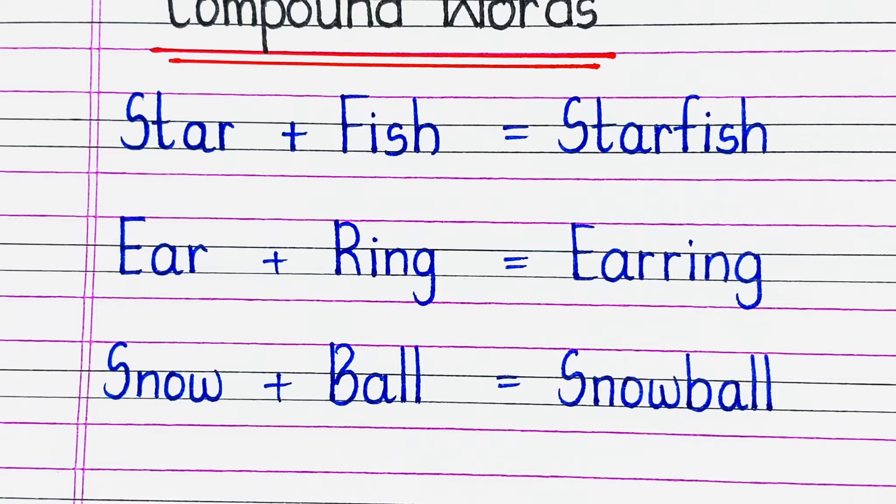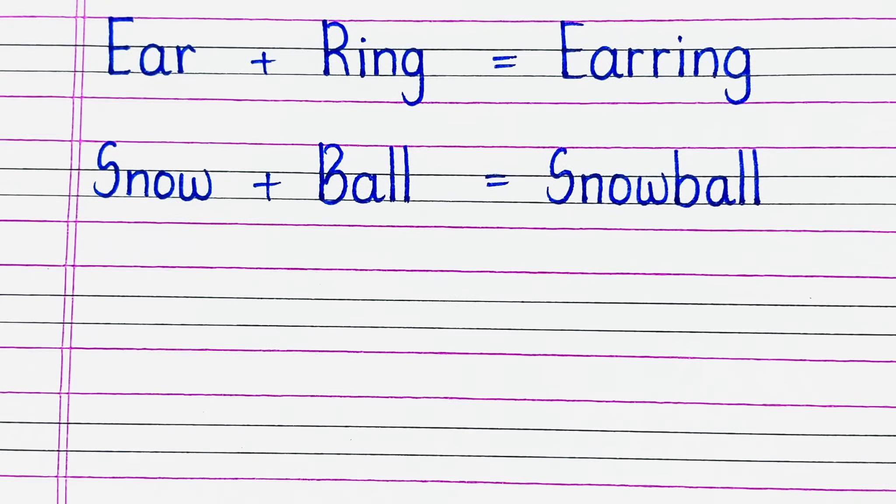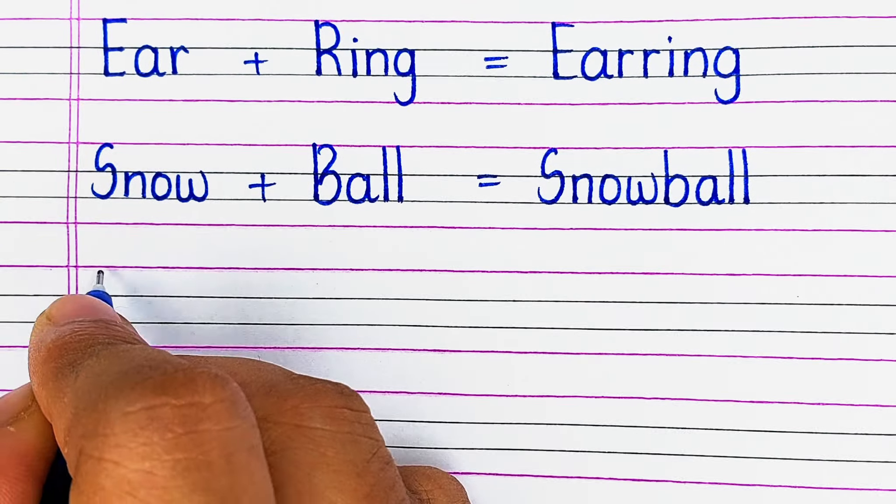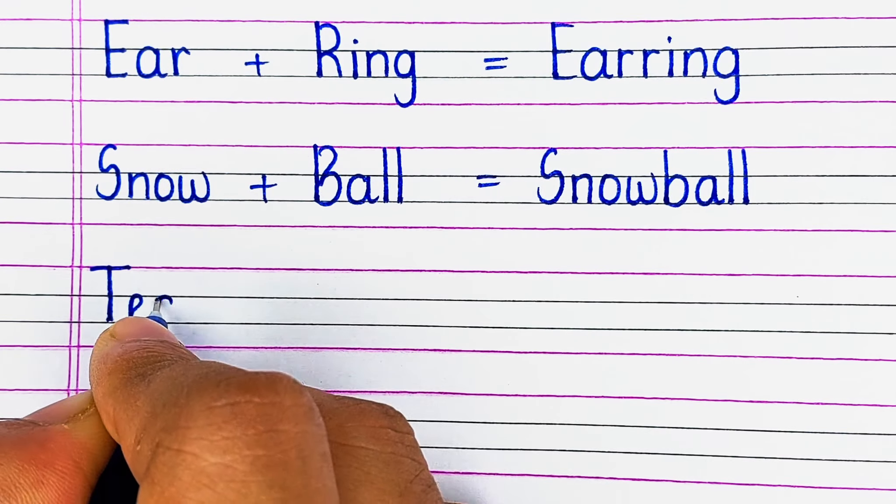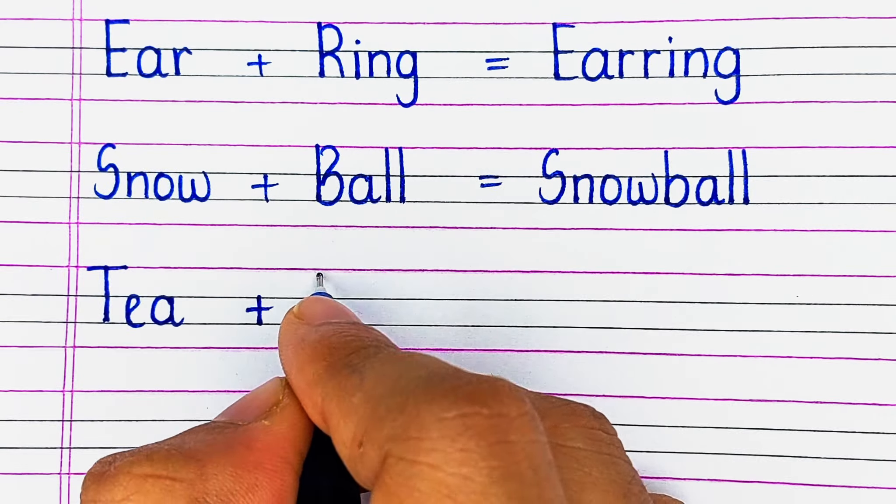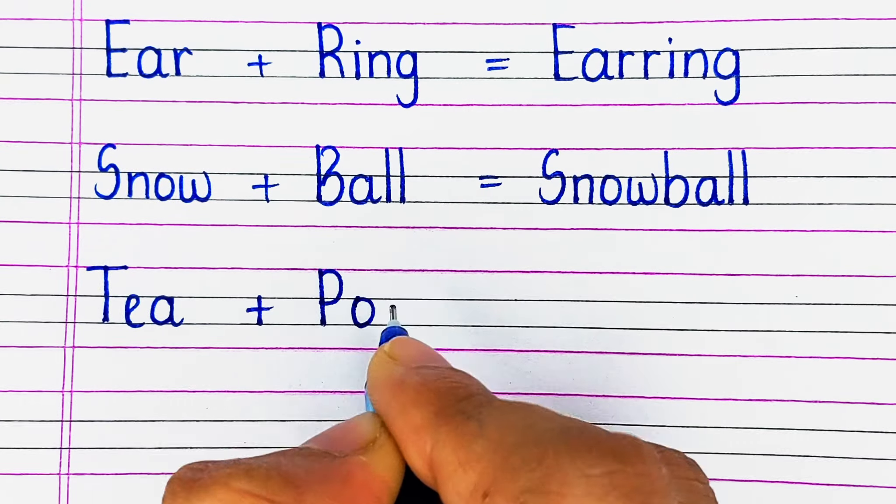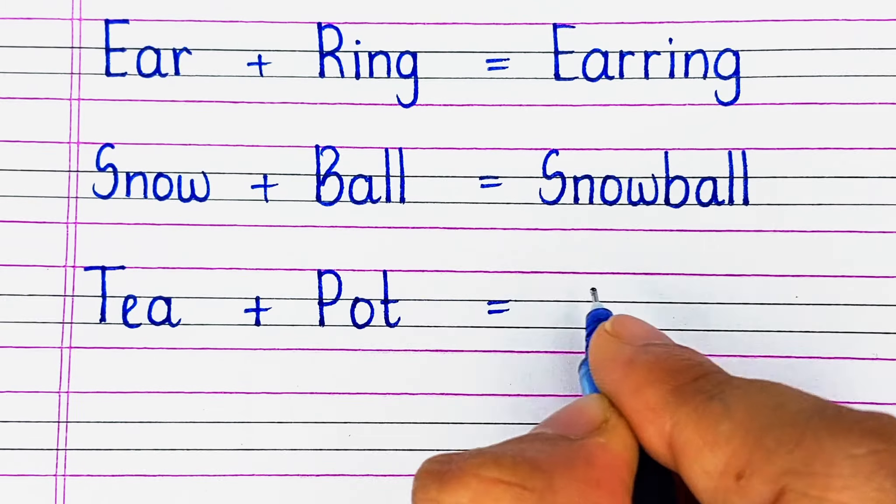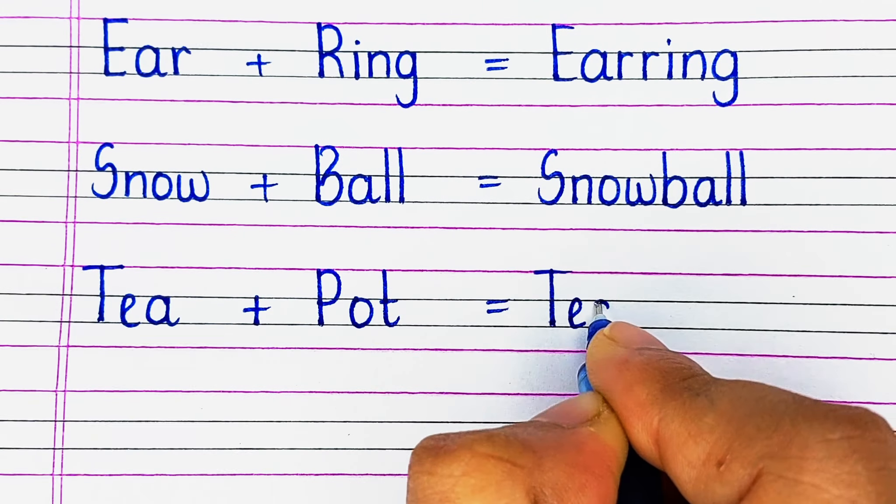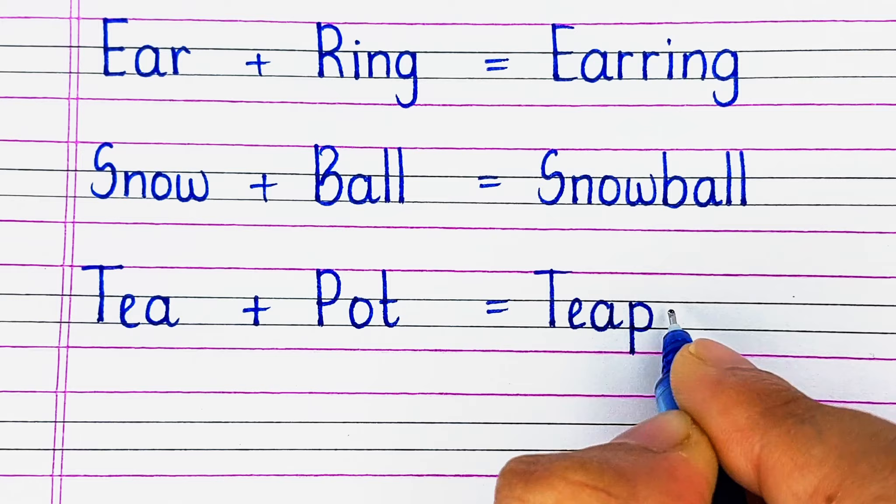Next, S-N-O-W snow plus B-A-L-L ball, snowball. Next is T-E-A tea plus P-O-T pot, teapot.